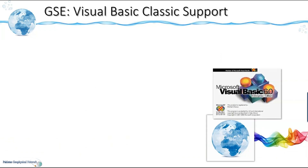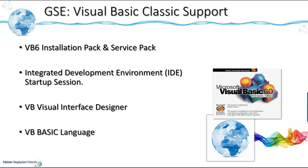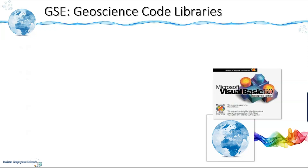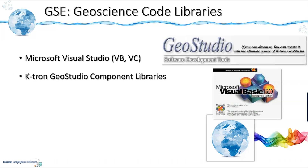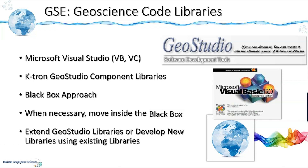We will be providing the following resources for this program: the VB6 installation package and service pack, an IDE startup session, familiarity with the Visual Basic Visual Interface Designer, and learning the Visual Basic language. In addition to Microsoft Visual Studio — which includes Visual Basic and Visual C — we will also be using the Ktron GeoStudio component library, which includes a number of geoscience libraries and hundreds of geoscientific functions. In general, we will use a black-box approach, calling functions from these libraries. But whenever necessary, we will move inside the black box and understand the algorithm. We will also extend the GeoStudio library and develop new libraries using existing ones.